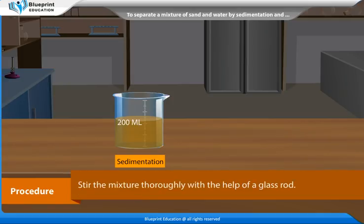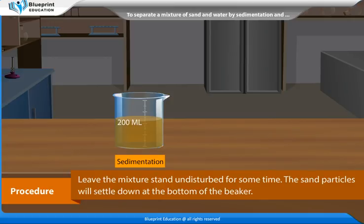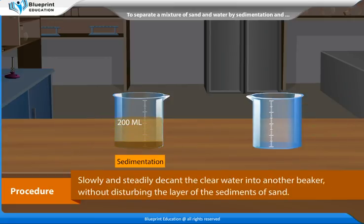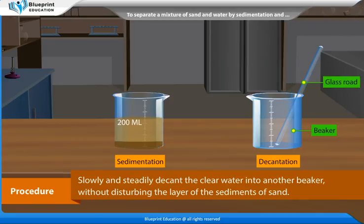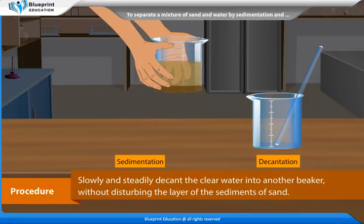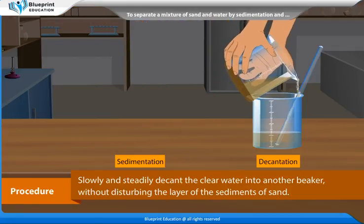Stir the mixture thoroughly with the help of a glass rod. Leave the mixture to stand undisturbed for some time. The sand particles will settle down at the bottom of the beaker. Slowly and steadily decant the clear water into another beaker, without disturbing the layer of the sediments of sand.